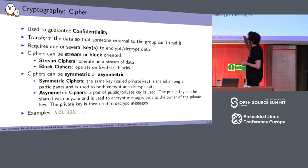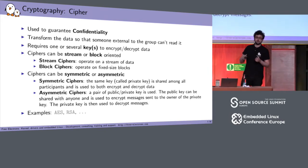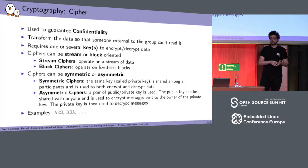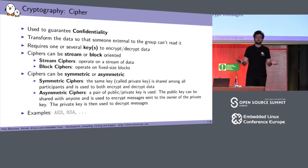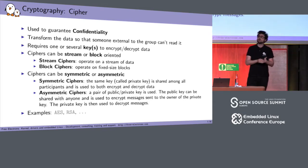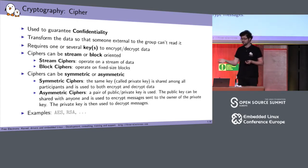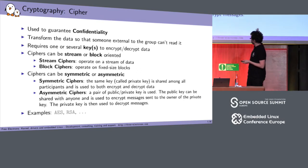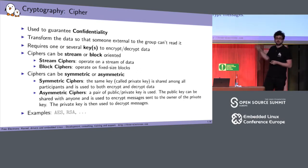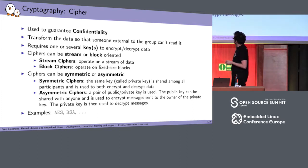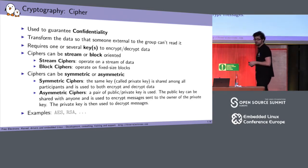To address that, we also have asymmetric ciphers which use a pair of public and private keys. The private key is kept secret and only the creator keeps it; they can send the public key to anyone who wants to communicate. Messages are encrypted using the public key and only the owner of the private key can decrypt them. We tend to use asymmetric ciphers when we don't know who we'll communicate with, but they're more expensive than symmetric ciphers. For example, AES is symmetric and RSA is asymmetric.